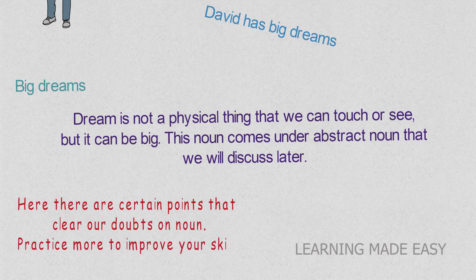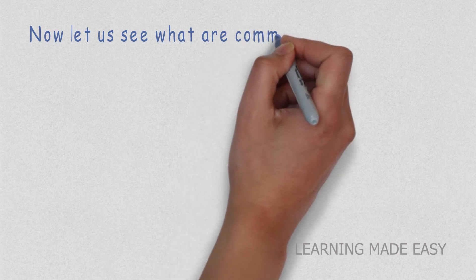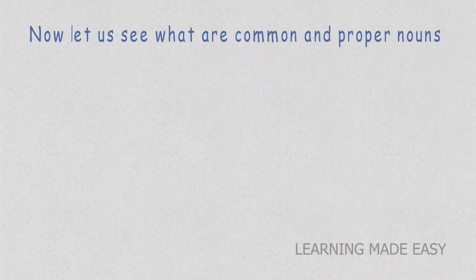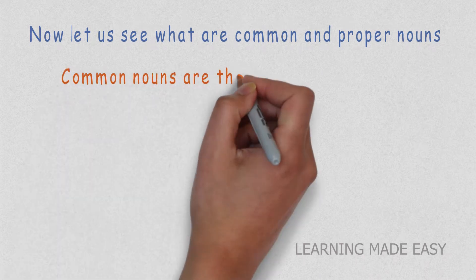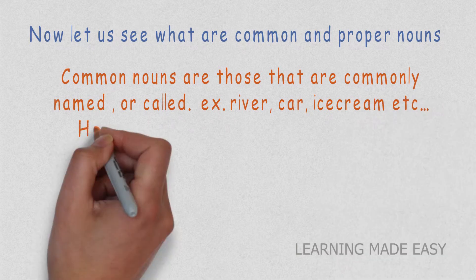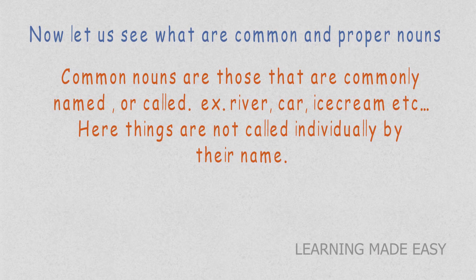Let us see what are common and proper nouns. Common nouns are those that are commonly named or called. Examples: river, car, ice cream, etc. Here things are not called individually by their name.